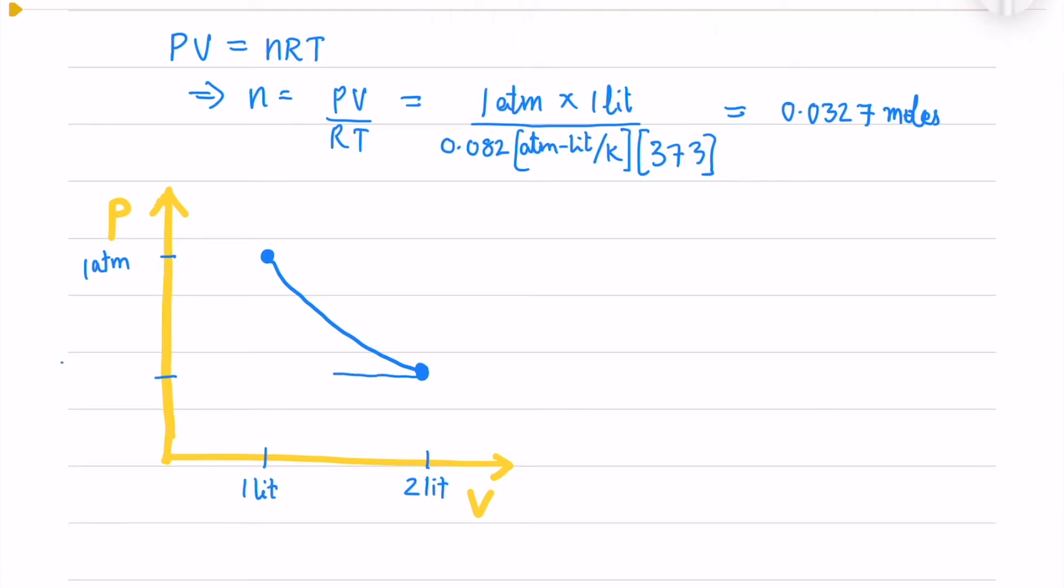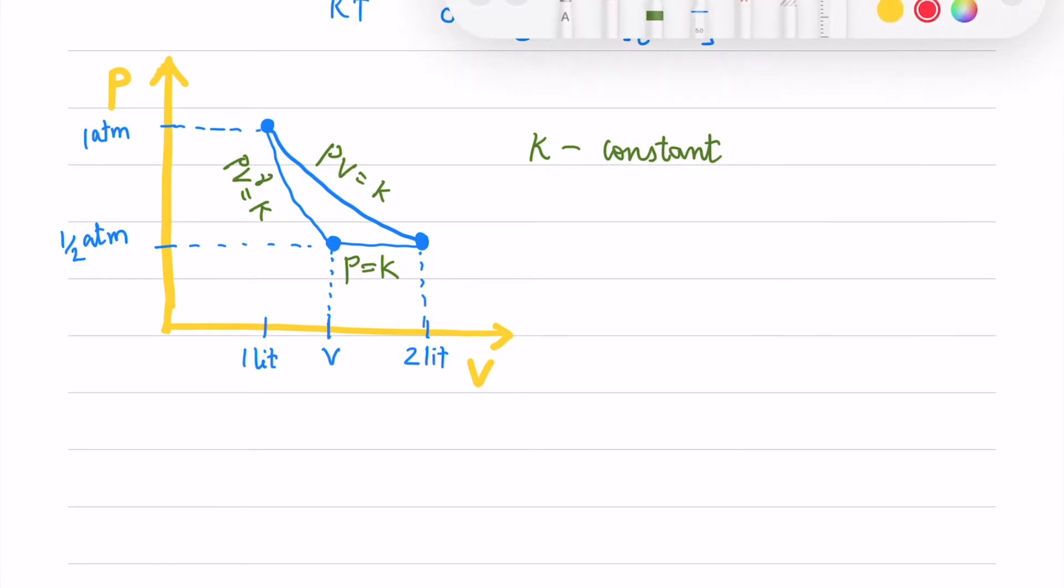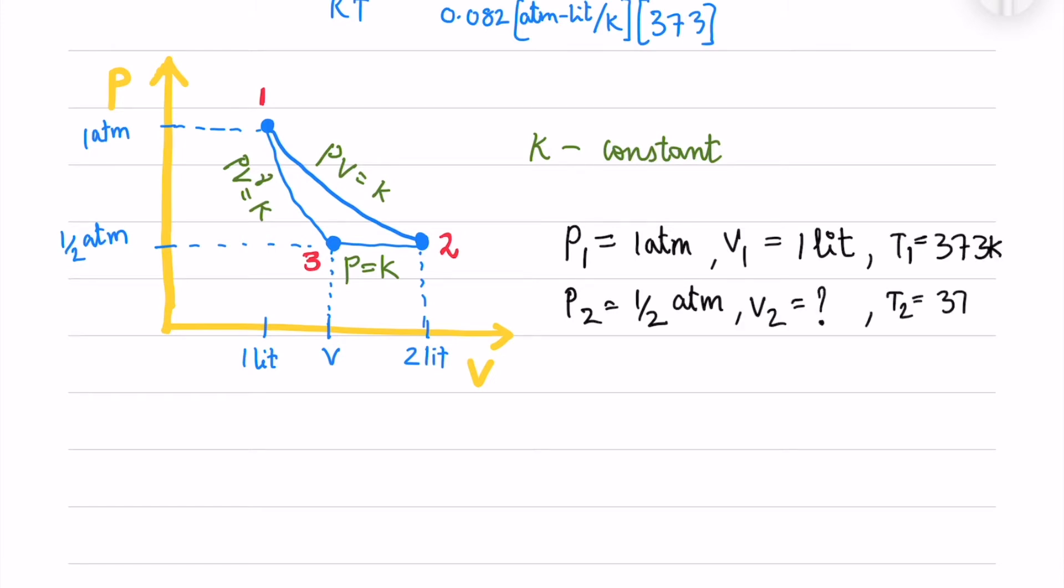After that it has been compressed at constant volume. Then it has been taken through an ideal adiabatic process where it reaches the initial state. So we have these three properties for these three processes. The K is constant.